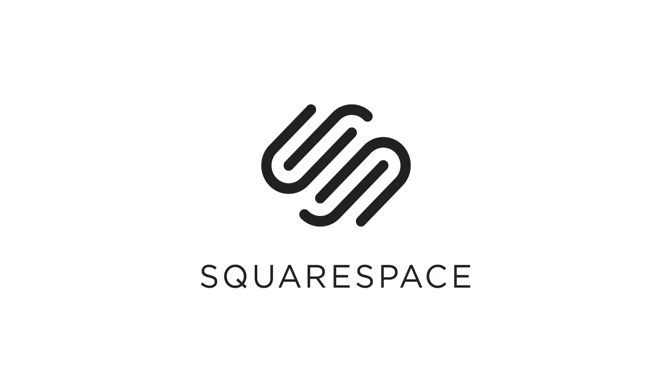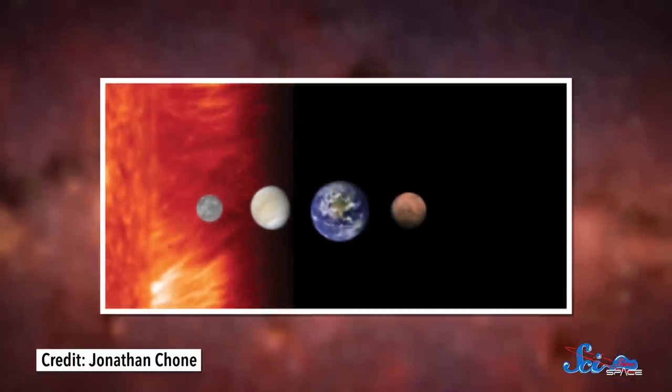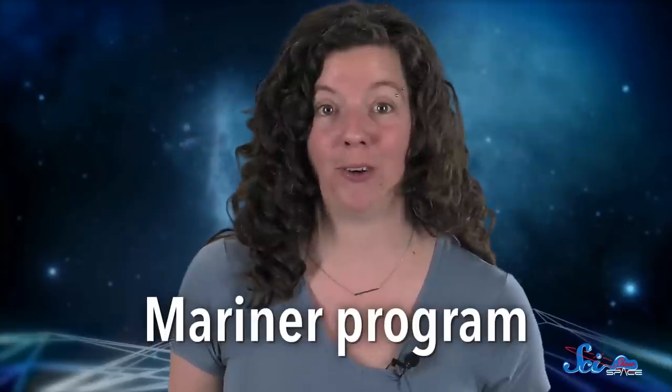This episode is brought to you by Squarespace. It might seem like we know a ton about the solar system, but we've really only learned most of what we know in the last 60 years or so. Before that, we didn't even know much about our closest neighbors, Mercury, Venus, and Mars. And then, the Mariner program came along.